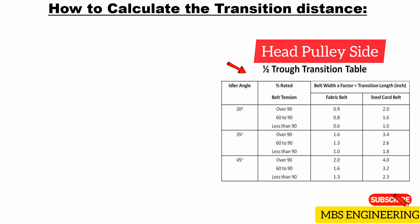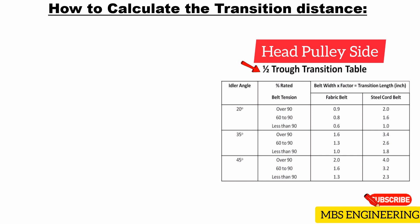To find the minimum recommended transition distance, multiply the belt width by the transition distance factor from the table. Please refer to the half trough transition table, which is useful for calculating the transition distance of the head pulley side.